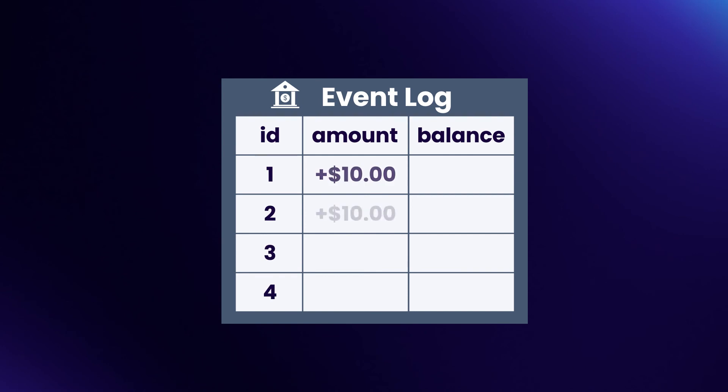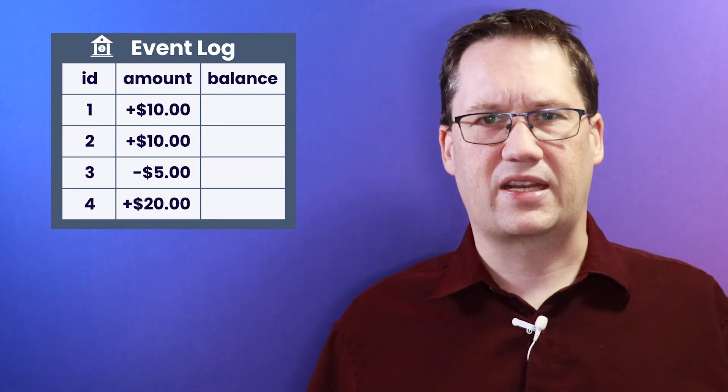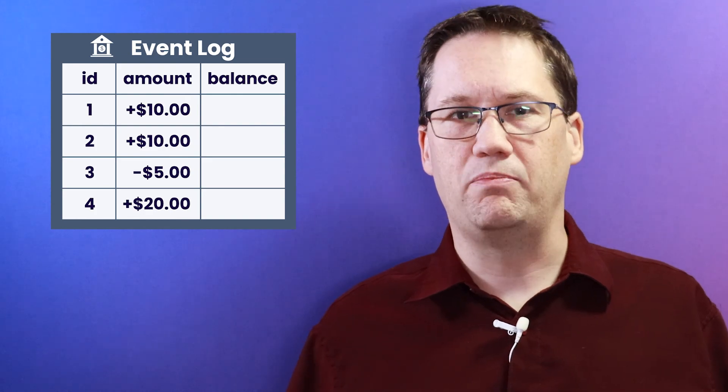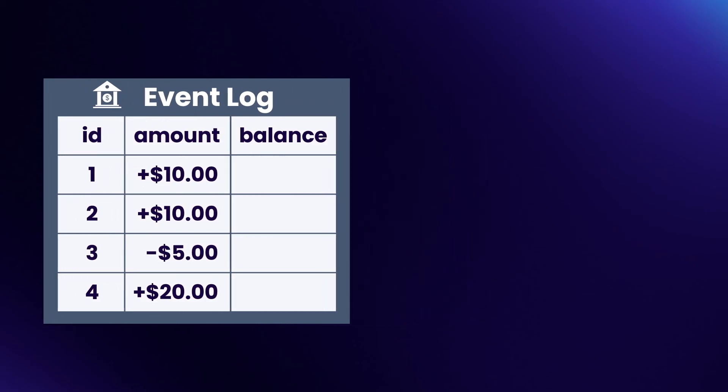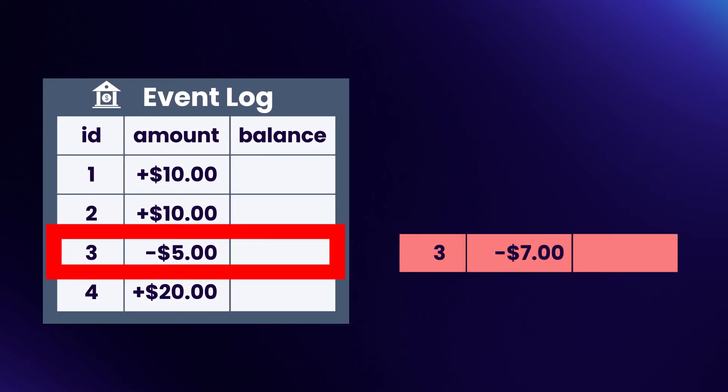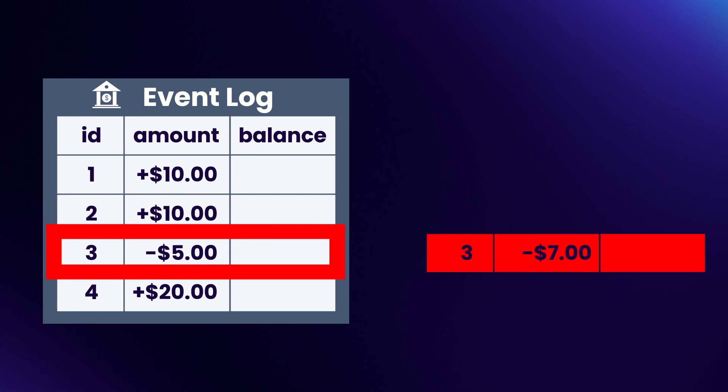The event log can be used for many things. However, the log is only as good as the quality of the events it contains. If you corrupt the events, you lose most of the value. As a best practice, you should treat the events as immutable — you write them once, and then you never update them. The reason is that every time you perform an update, you risk losing data or changing the meaning of the events. The goal is to keep the events safe and consistent, so they will always be there for you to use.